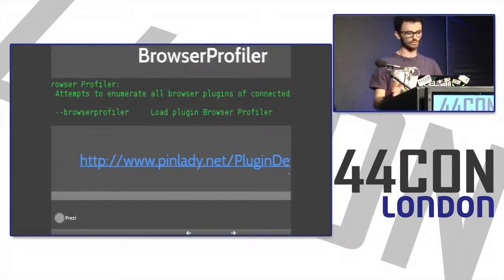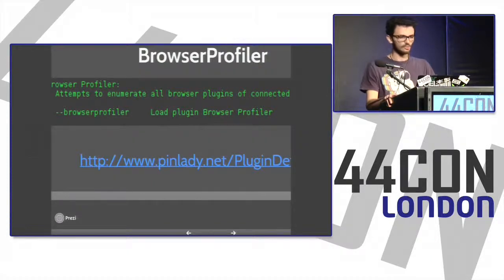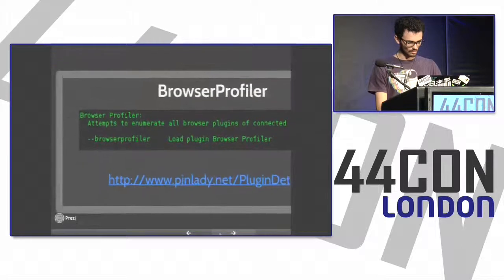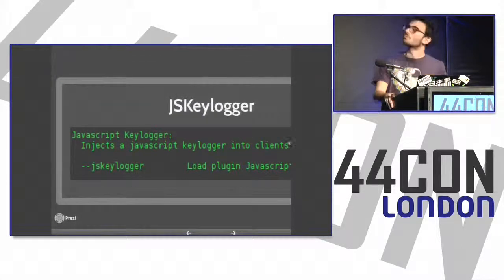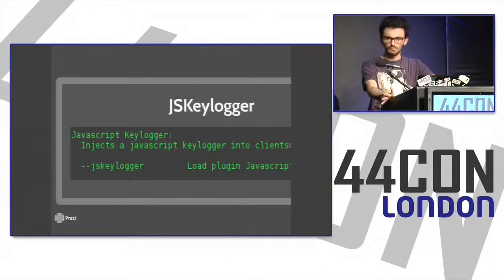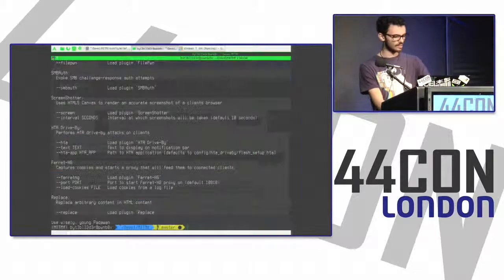The browser profile plugin uses the OSJS JavaScript library from Metasploit and also the plugin-detect JavaScript library from Pinlady, which can enumerate exactly the Java version and Flash version installed. The JavaScript keylogger was also borrowed from Metasploit and has been slightly modified to support Unicode — added by a contributor named Hamid9 — and also modified to work on mobile devices, since the Metasploit version did not support mobile.